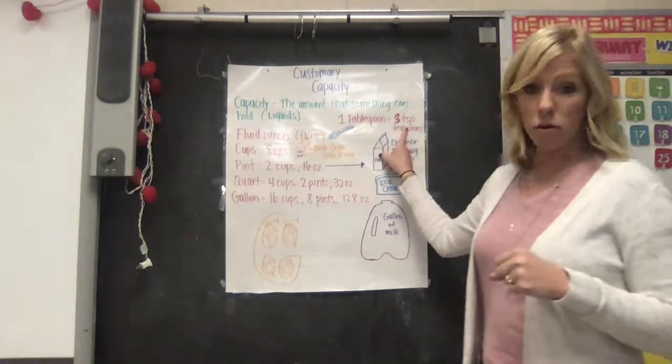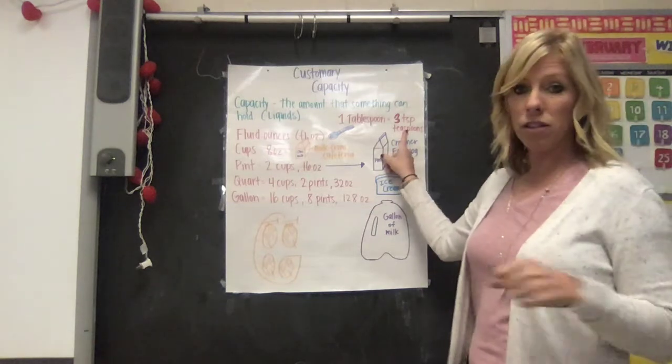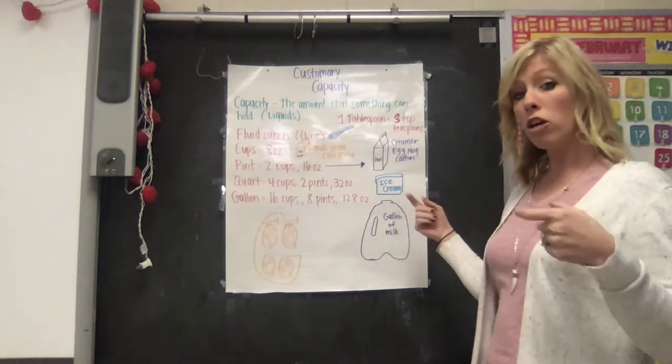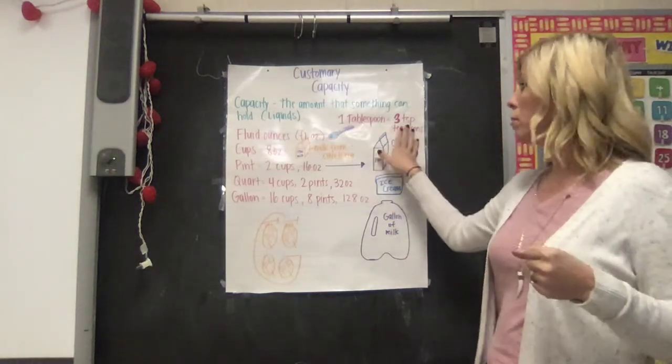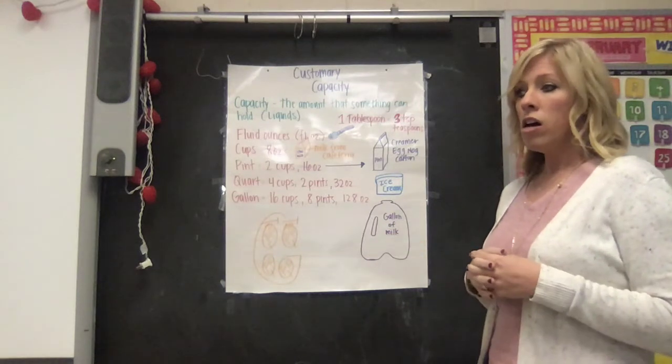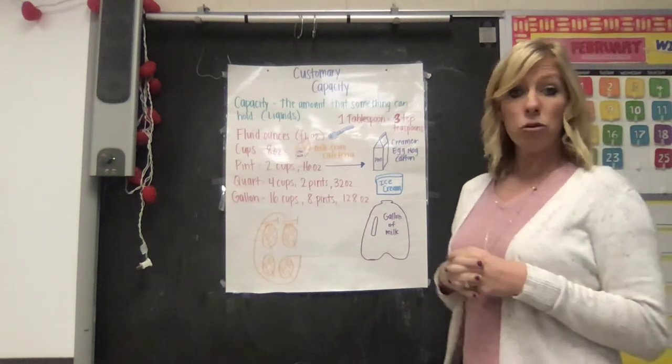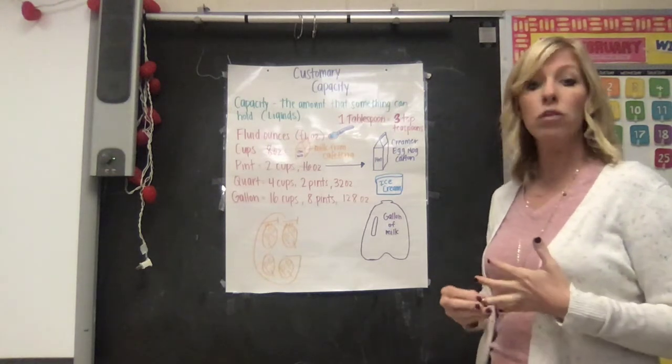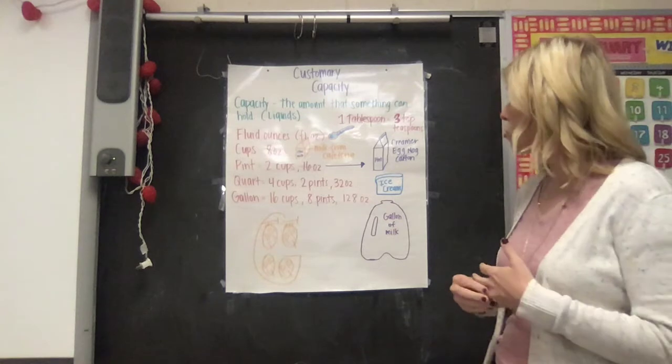Tablespoons and teaspoons are also very small amounts. Picture a spoon. A tablespoon is larger than a teaspoon. One tablespoon is actually about three teaspoons. You may have used that in measurement earlier this year when we were making our Christmas ornaments. We used teaspoons and tablespoons to do that.